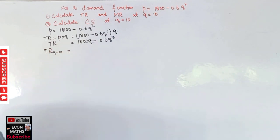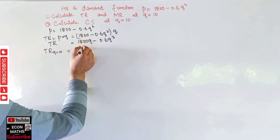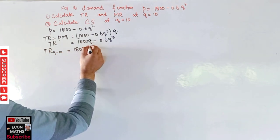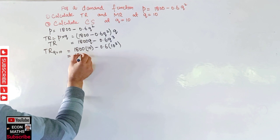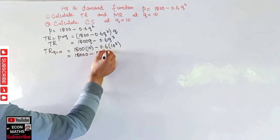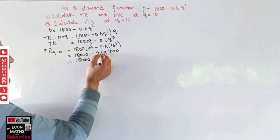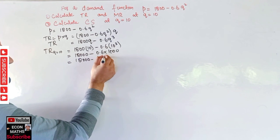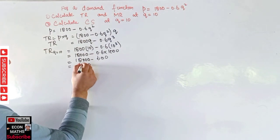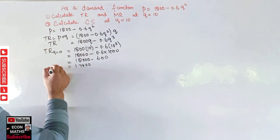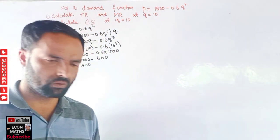Total revenue when q = 10: we insert the value q = 10 into the total revenue function. So TR = 1800(10) - 0.6(10)³ = 18,000 - 0.6 × 1000 = 18,000 - 600 = 17,400. So total revenue when q = 10 is equal to 17,400.